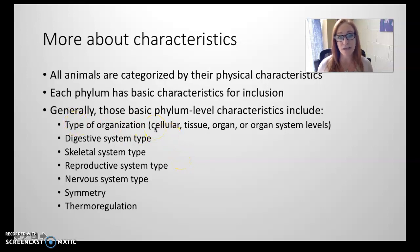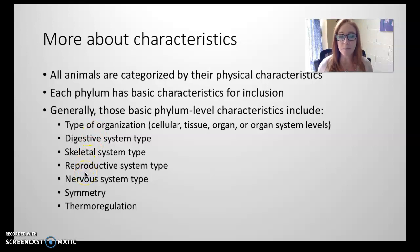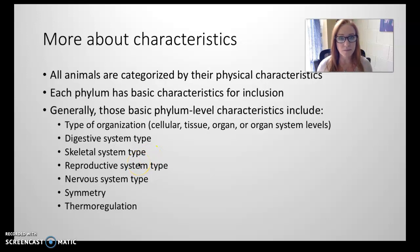The type of organization the animal has — cellular, tissue, organ, or organ system level. Not all animals have organs or organ systems. They'll also delineate the digestive type: complete gut or incomplete gut. Skeletal system: internal or exoskeleton. Reproductive system type. There's also nervous system type — do they have a centralized nervous system or not? Symmetry, and thermoregulation, which we have not talked about yet.